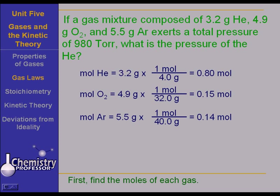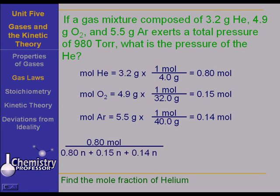Now we want to know the pressure of helium, so we need to find the mole fraction of helium. To find the mole fraction of helium, we take the 0.8 moles of helium over the sum of all of those moles. 0.8 plus 0.15 plus 0.14. That gives us the mole fraction of helium.